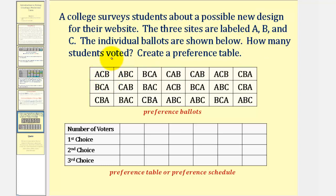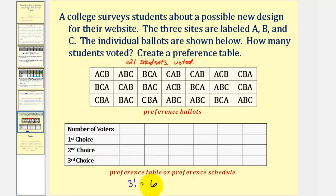We're first asked how many students voted. Well, notice how we have three rows of seven. And then from these ballots, we can create a preference table where we'll list the choices from first through third, then the number of voters in the first row that voted for each order. And since there are three choices, there are a total of three factorial, or six possible orders of preference. We can also use the counting principle and say there are three options for the first choice, two options for the second choice, and one option for the third choice, giving us a total of six different orders for the choices.